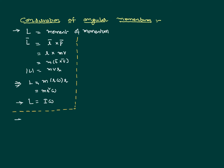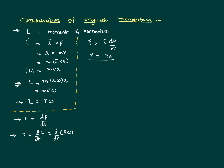We know that force in translatory motion is defined as rate of change of momentum. Similarly, in rotatory motion we have torque, which is defined as rate of change of angular momentum. Since angular momentum equals Iω, and treating I as constant, we can write torque as I times dω/dt, which gives torque equal to I·α.